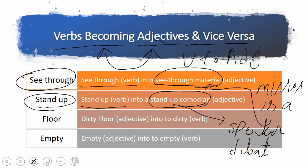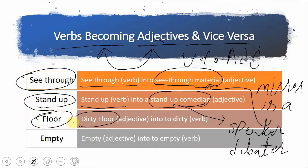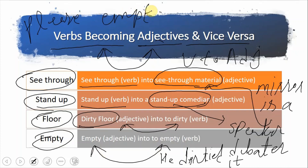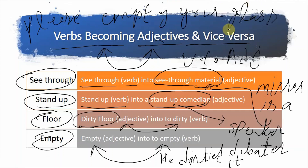Dirty floor میں dirty as an adjective use ہوتا ہے، لیکن to dirty as a verb بھی use ہوتا ہے — یعنی کسی چیز کو گندہ کر دینا، جیسے he dirtied it۔ اسی طرح empty as an adjective use ہوتا ہے، لیکن as a verb بھی — to empty: please empty your glass۔ تو یہ ہیں verbs becoming adjectives اور vice versa۔